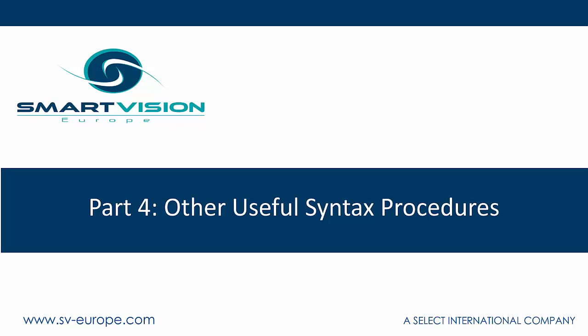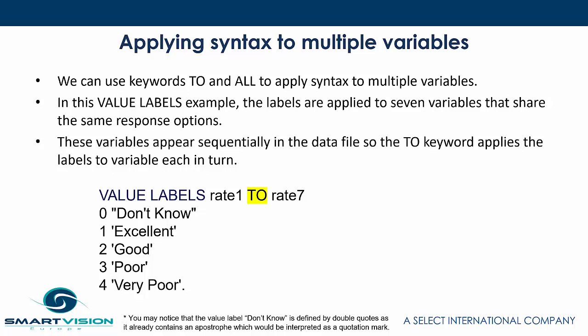Looking at specific syntax procedures, we're going to finish up looking at a bunch of procedures which are generally useful to know about — pretty handy procedures. The first two we're going to refer to are the keywords TO and ALL, and these are really useful when you want to apply syntax to multiple variables at the same time.